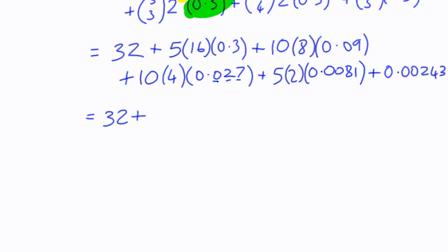32 is our first term. 5 times 16 is 80, and 80 multiplied by 0.3 - well, 0.3 times 8 is 2.4, multiplied by 10 is 24. Next term, we've got 10 times 8 is 80, multiplied by 0.09. 8 times 0.09 is 0.72, multiplied by 10 is 7.2.